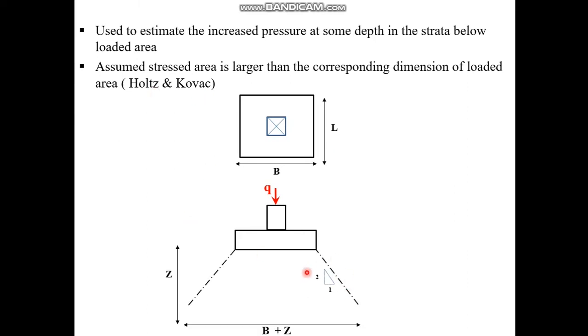According to Holtz and Kovacs, the stress due to the footing is distributed with a ratio of 2 vertical to 1 horizontal. The stress at depth Z is given by B (the width) plus Z (the depth). Maximum stress is located right below the center of the footing and decreases in both lateral directions.